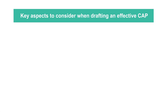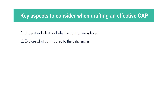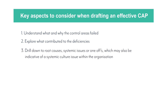There are several key aspects to consider when drafting an effective CAP. First, understand what and why the control areas failed — you must identify all root causes that have contributed to the failures. Second, explore what contributed to the deficiencies, focusing on individual behaviour, training, knowledge, experience, development and resources provided. Third, drill down to root causes — systemic issues or one-offs — which may also be indicative of a systemic culture issue within the organisation.